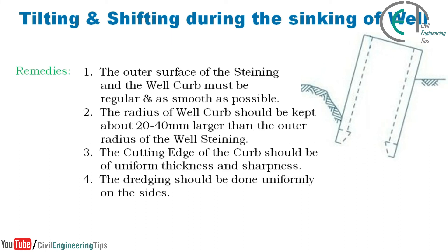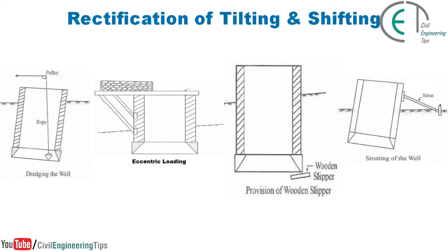The remedies for tilting and shifting are: the outer surface of the steining and the well curb must be regular and as smooth as possible; the radius of the well curb should be kept about 20 to 40 millimeters larger than the outer radius of the well steining; the cutting edge of the curb should be of uniform thickness and sharpness; and dressing should be done uniformly on the sides. Examples of rectification methods include: raking the well, eccentric loading, provision of wooden slivers at the bottom of the well, and strutting of the well.